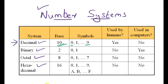Any decimal number can be formed by using the combination of these 10 symbols. The decimal number system is used by humans, but it is not used by computers.